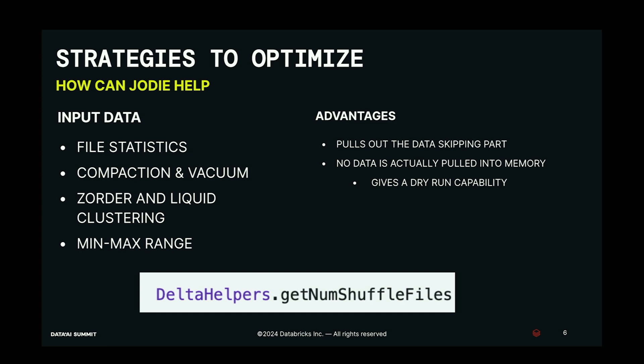You might be doing compaction to reduce file sizes, Z-order, liquid clustering, or putting a min-max range in your merge condition — all of this to take advantage of data skipping. However, there is no clear visualization. You have to actually run the Spark job to know whether data skipping worked or not. What you really want is a dry-run capability where your data doesn't get pulled into memory, yet you can see whether your compaction took effect. That's where Jodie can help.